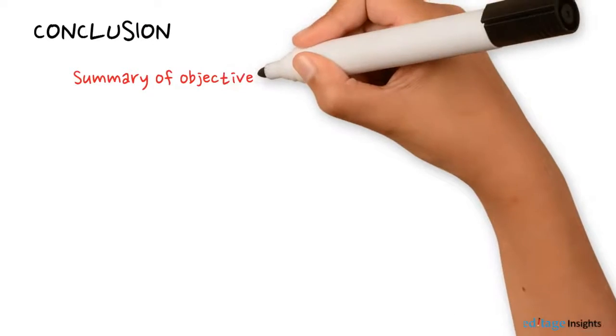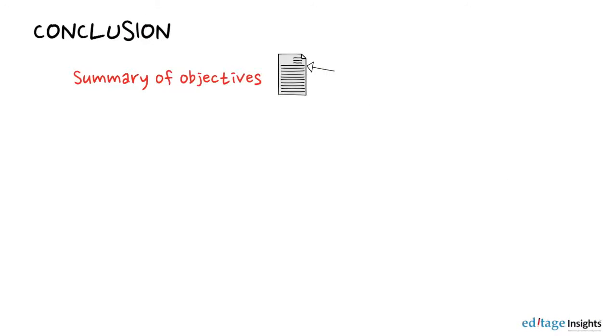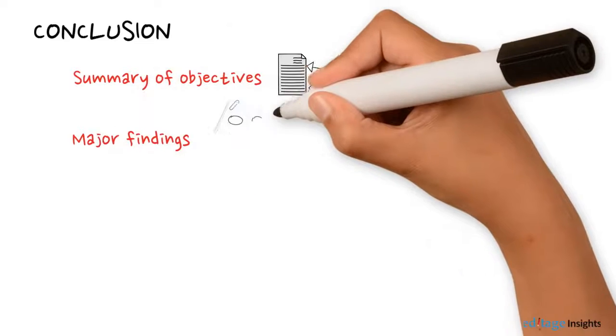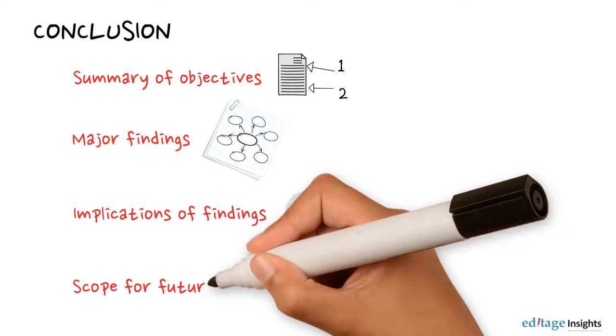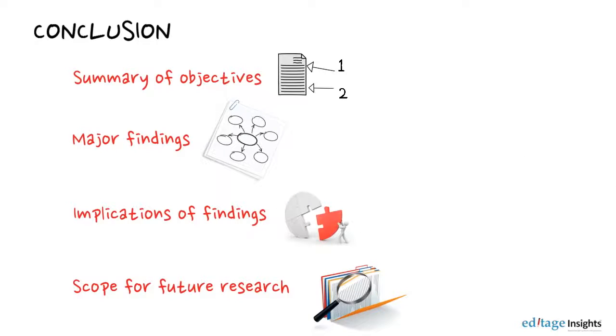And finally, in the conclusion, you must tie it all together, sum up the objectives of your paper, list your major findings, share the implications of the study findings, and mention the scope of further research on the same topic.